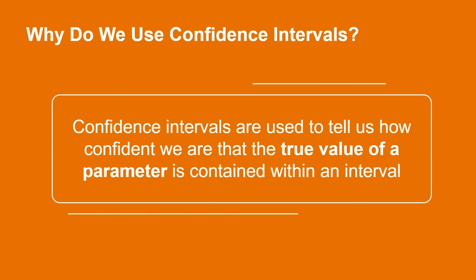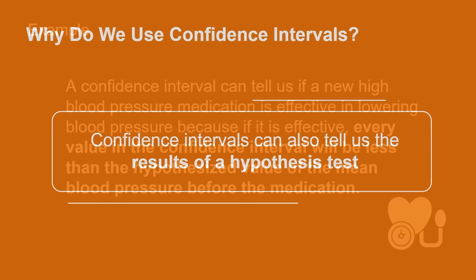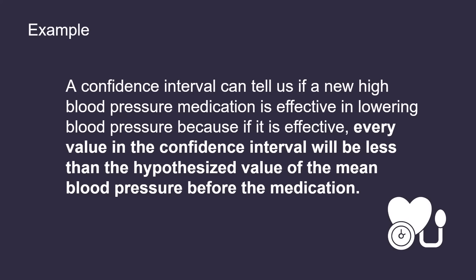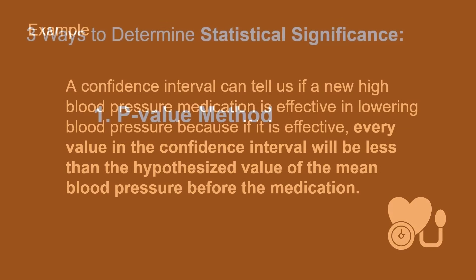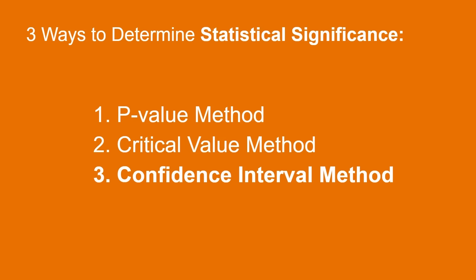Confidence intervals are a very versatile tool in statistics. They can be used to tell us how confident we are that the true value of a parameter is contained within an interval, as well as give us the results of hypothesis tests. For example, a confidence interval can tell us if a new high blood pressure medication is effective in lowering blood pressure, because if it is effective, every value contained within the interval will be less than the hypothesized value of the mean blood pressure before the medication. We already know that both the p-value method and the critical value method can be used to test for statistical significance, but we can also determine the outcome of a hypothesis test using confidence intervals.